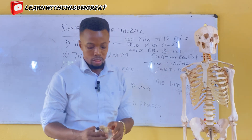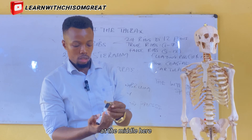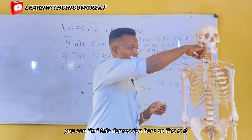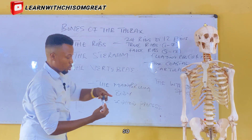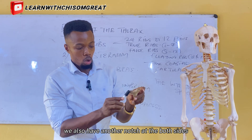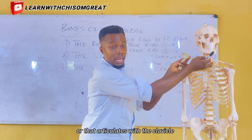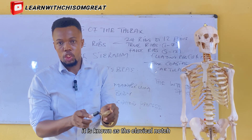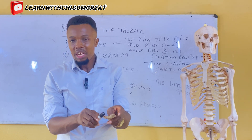At the superior part of the sternum, at the middle, you notice a depression here — it is known as the jugular notch of the sternum. We also have another notch at both sides that articulates with the clavicle, known as the clavicular notch. So the one at the middle is the jugular notch, and the ones at both sides are the clavicular notch.